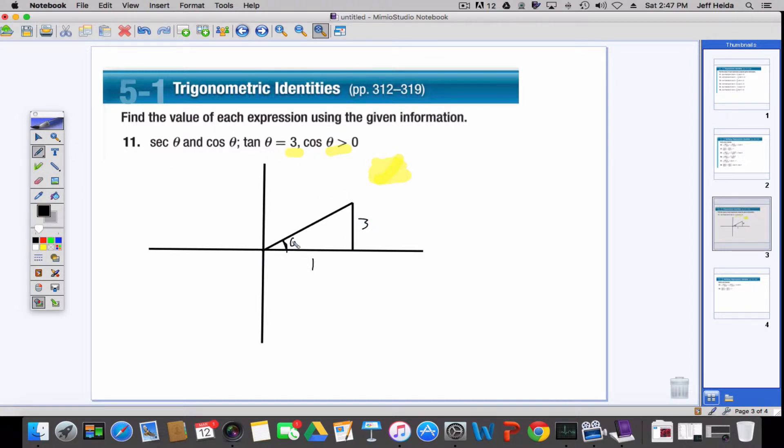So we draw the triangle. And now we know tangent is 3 over 1. And this is the angle we're looking at. So the hypotenuse is going to be 3 squared plus 1 squared, square root of which is 10. Square root of 10.